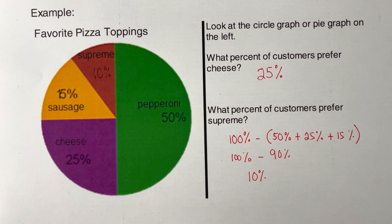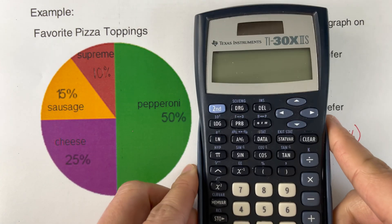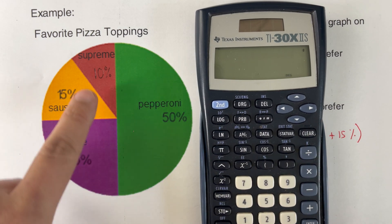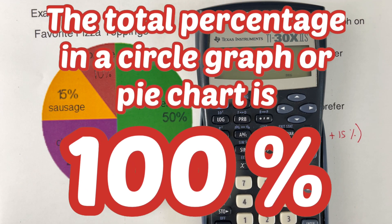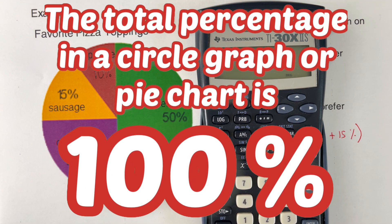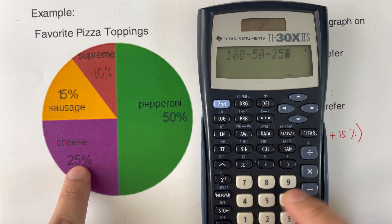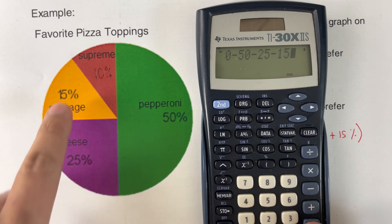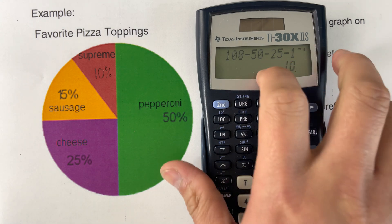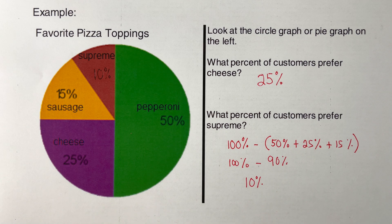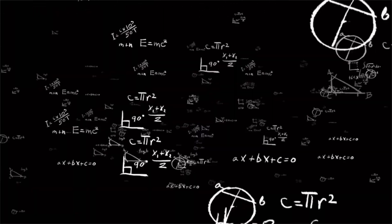Another way to find the missing value without showing all that work is to use a calculator. We start from 100 and subtract each percentage: 100 minus 50 minus 25 minus 15, which gives 10%. That's the same result as before.